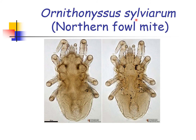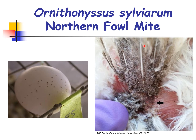This diagram shows Ornithonyssus sylviarum, or the northern fowl mite — left is the dorsal view, the right is the ventral view. Ornithonyssus sylviarum infestation can cause soiled and matted feathers, severe scabbing especially around the vent area, and a decrease in egg production.